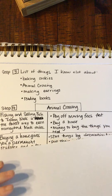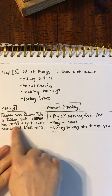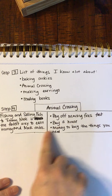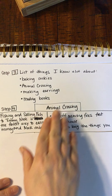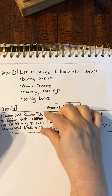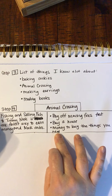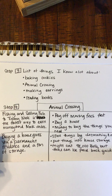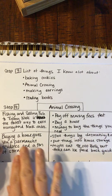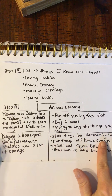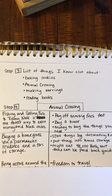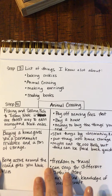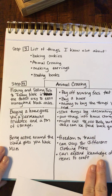Fishing and selling fish to Timmy Nook is the fastest way to earn money and Nook Miles — so this means I can pay off moving fees fast, buy a house, and get money to buy the things that you need. That would be my bolded sentence, and these would be my key details to fit into the paragraph after it. Then: buying a house gives you a permanent residence and a ton of storage — again a bolded sentence with key details for the paragraph. And finally: being active around the island gives you Nook Miles — bolded sentence with details for my paragraph.